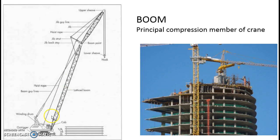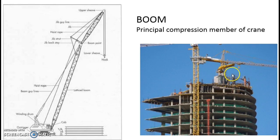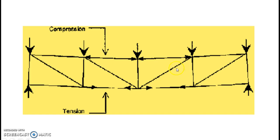A boom is basically the principal compression member. In cranes, all the loads — whatever material is being lifted from ground level to the top — come to this member, that's why it is called the boom. In any type of truss, if the load is applied in the downward direction, all the top members are compression members and the bottom members are tension members.